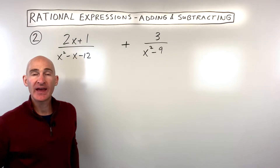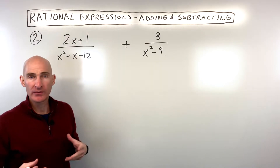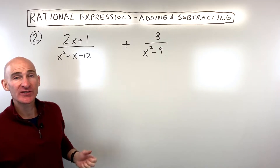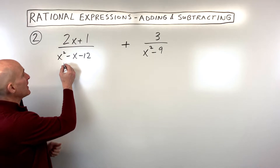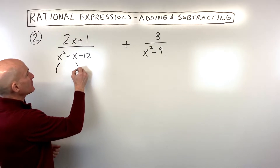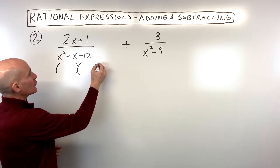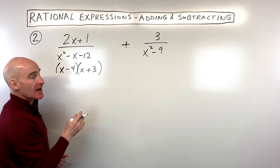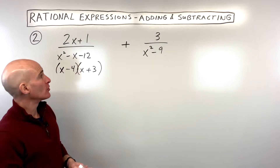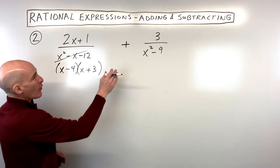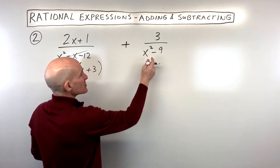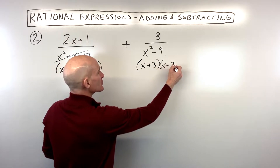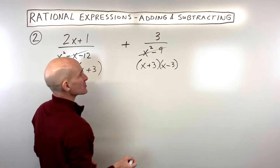For example number 2, if you feel like you're getting the hang of this, try to do this one on your own and we'll go through it together. Remember, the first step is to factor the denominators and see what they're made up of. What multiplies to negative 12 but adds to negative 1? That's going to be negative 4 and positive 3. Now over here we have a difference of two squares, so when we factor this one, it's going to factor as a sum and difference pattern — x plus 3, x minus 3.